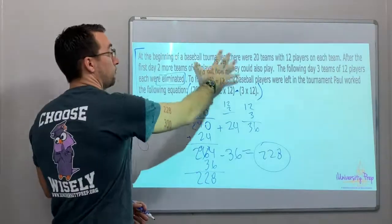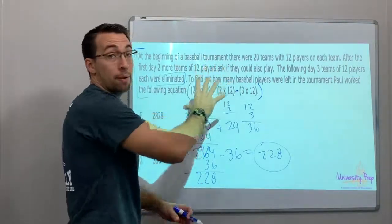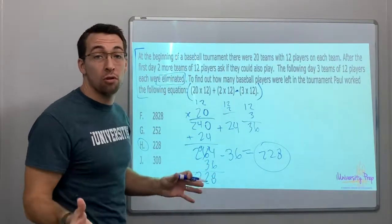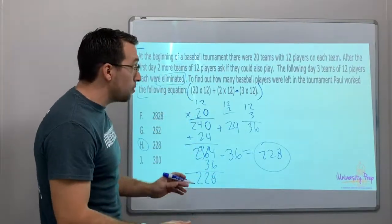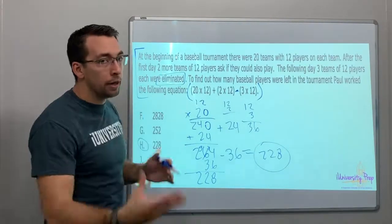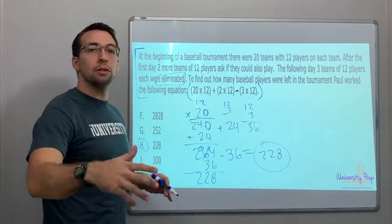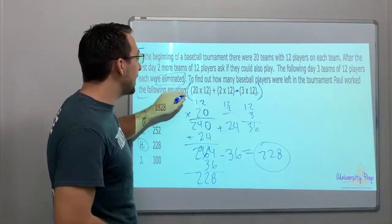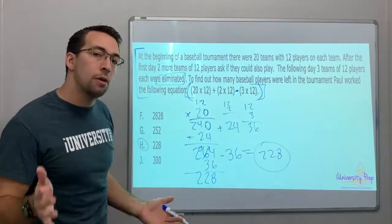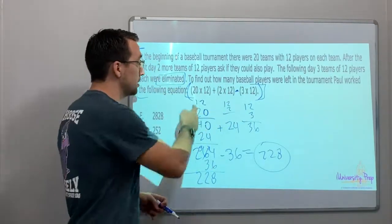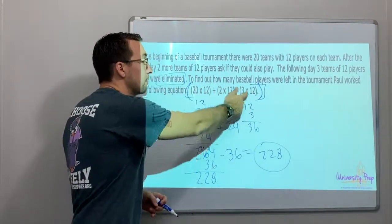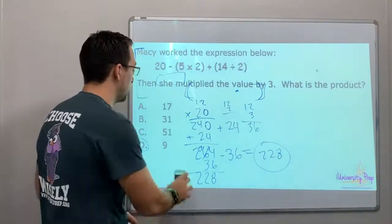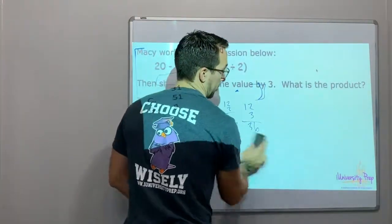Don't get freaked out by a lot of words. Take a deep breath — if you get confused, reread it two, three, four times. Calm down. They gave you the equation, so all you have to do is the parentheses first, then multiply, or do the next operations.